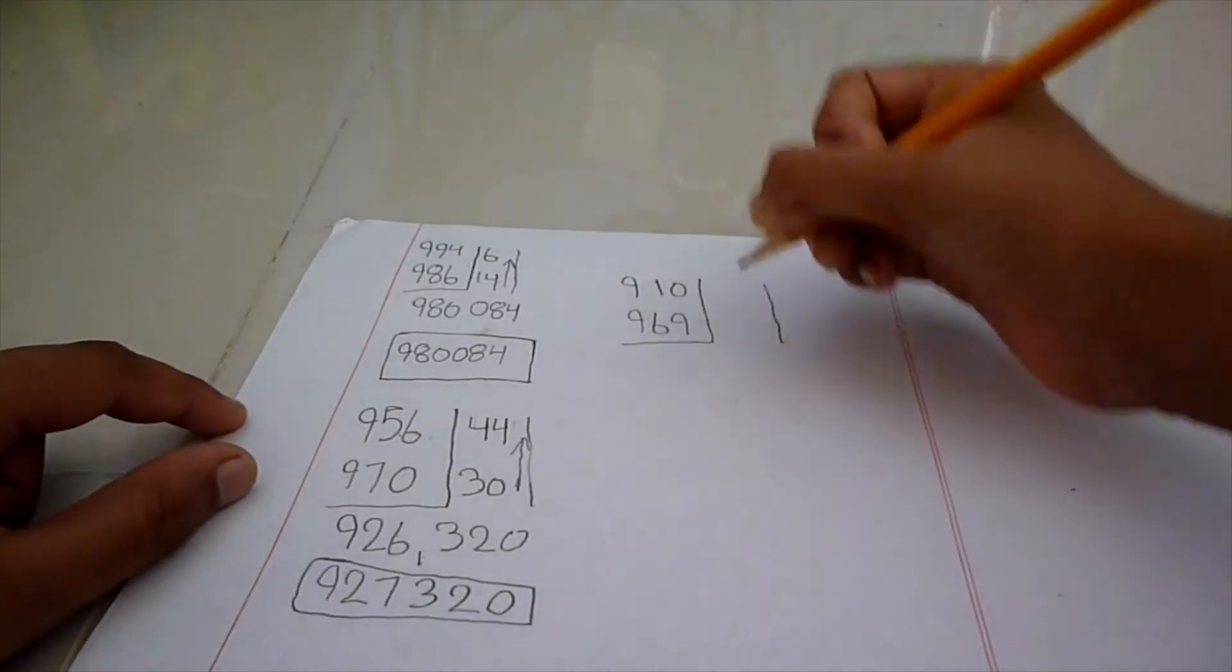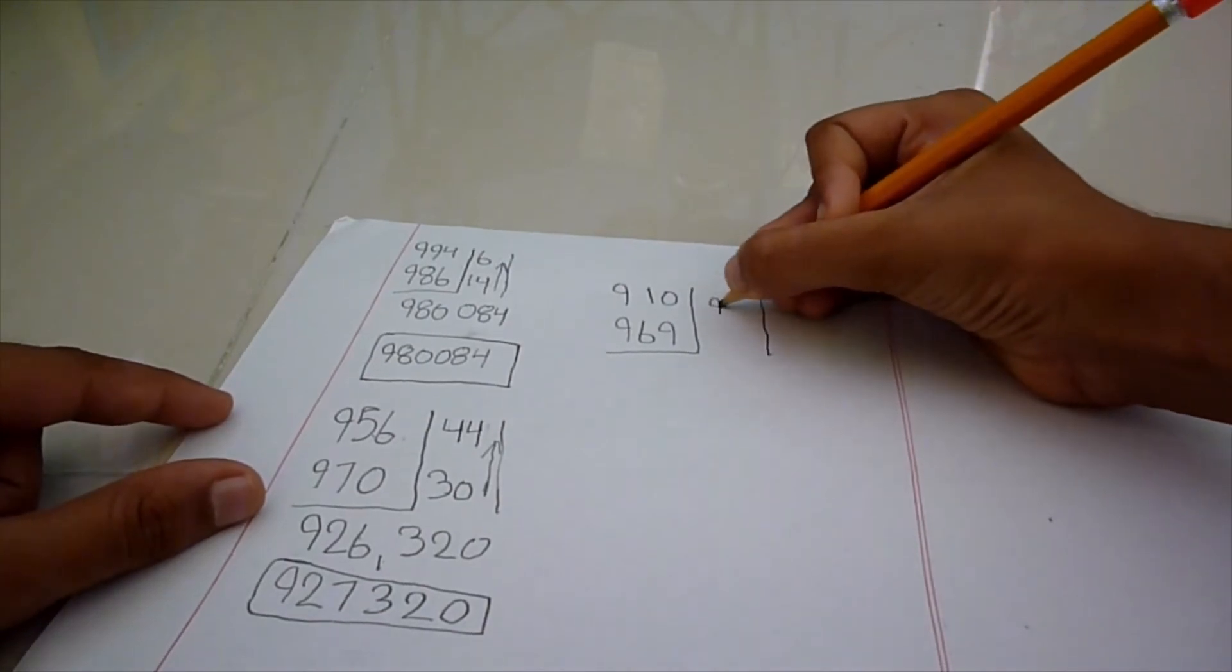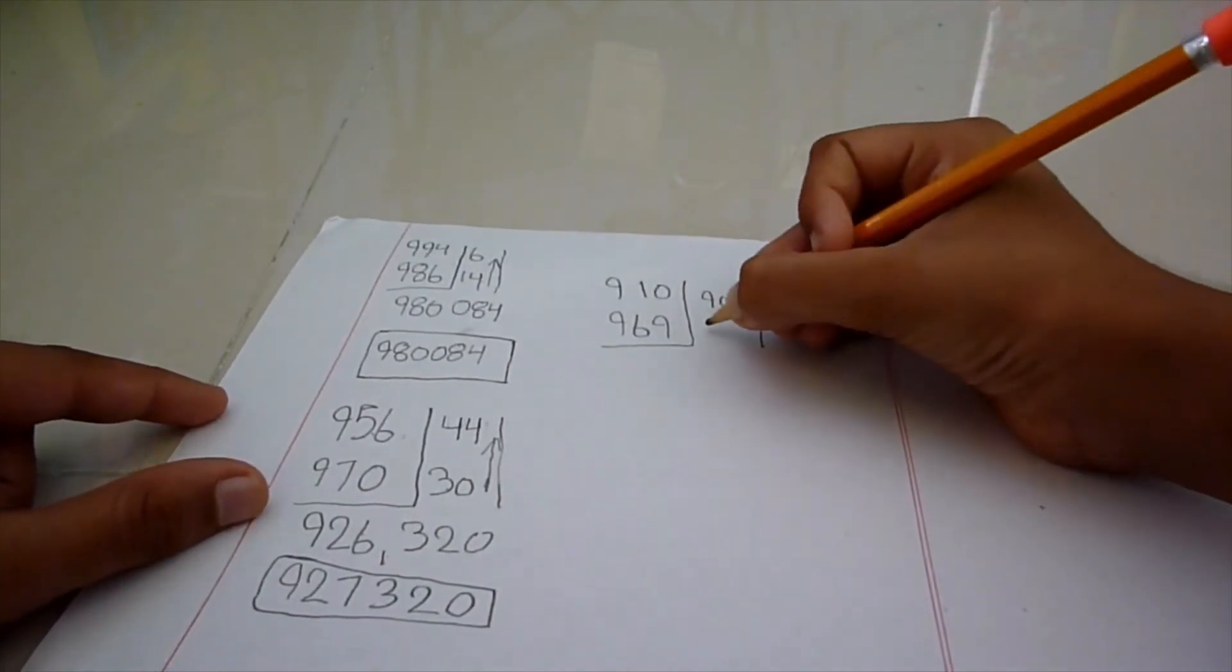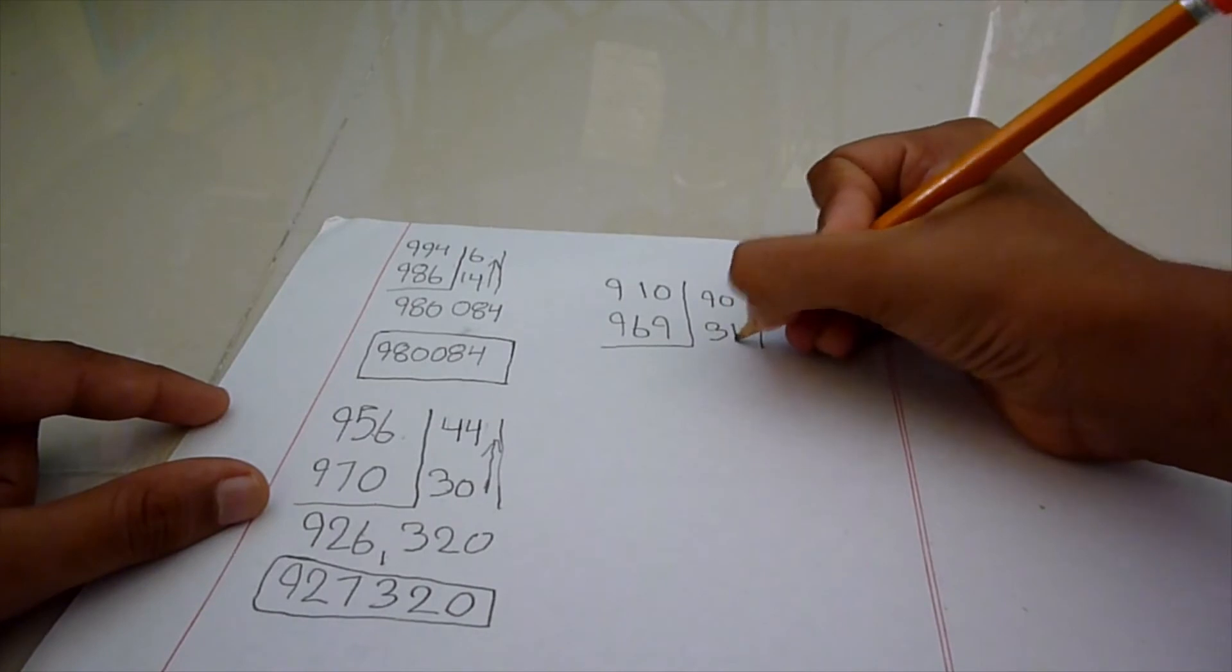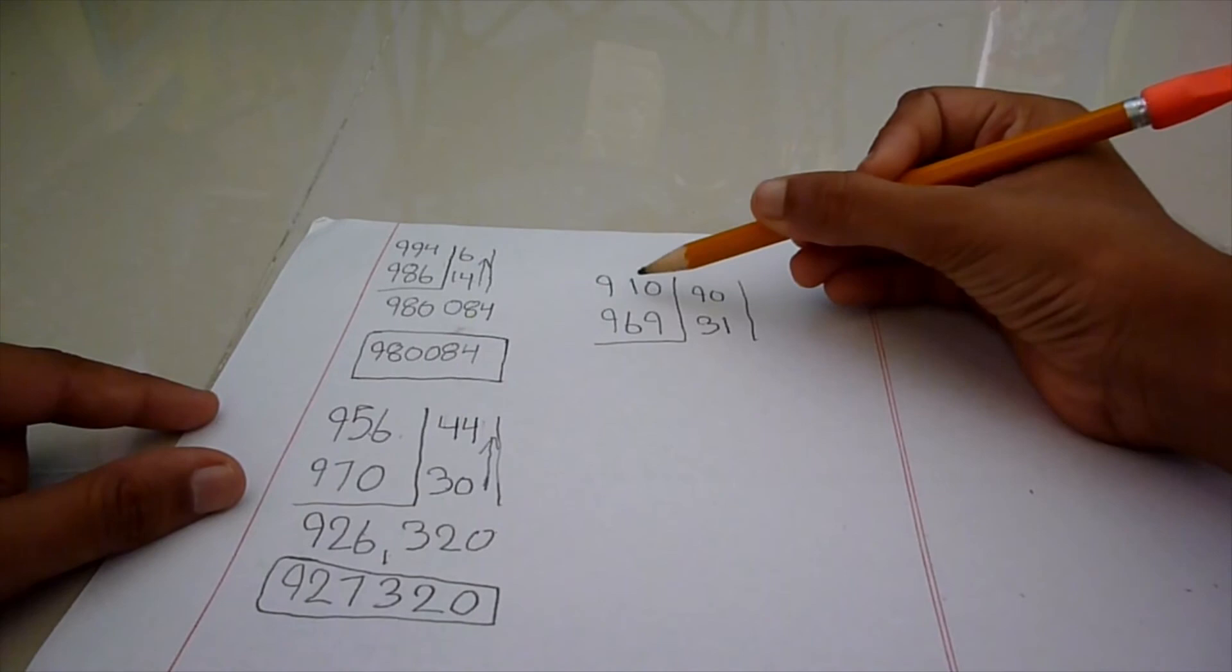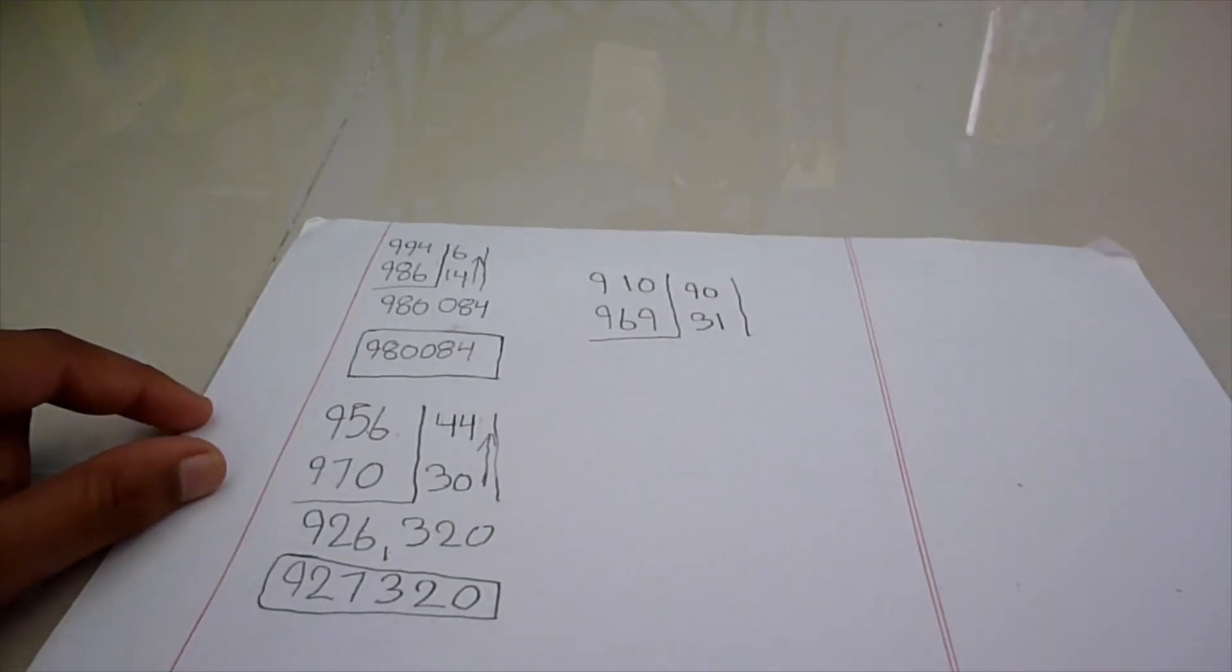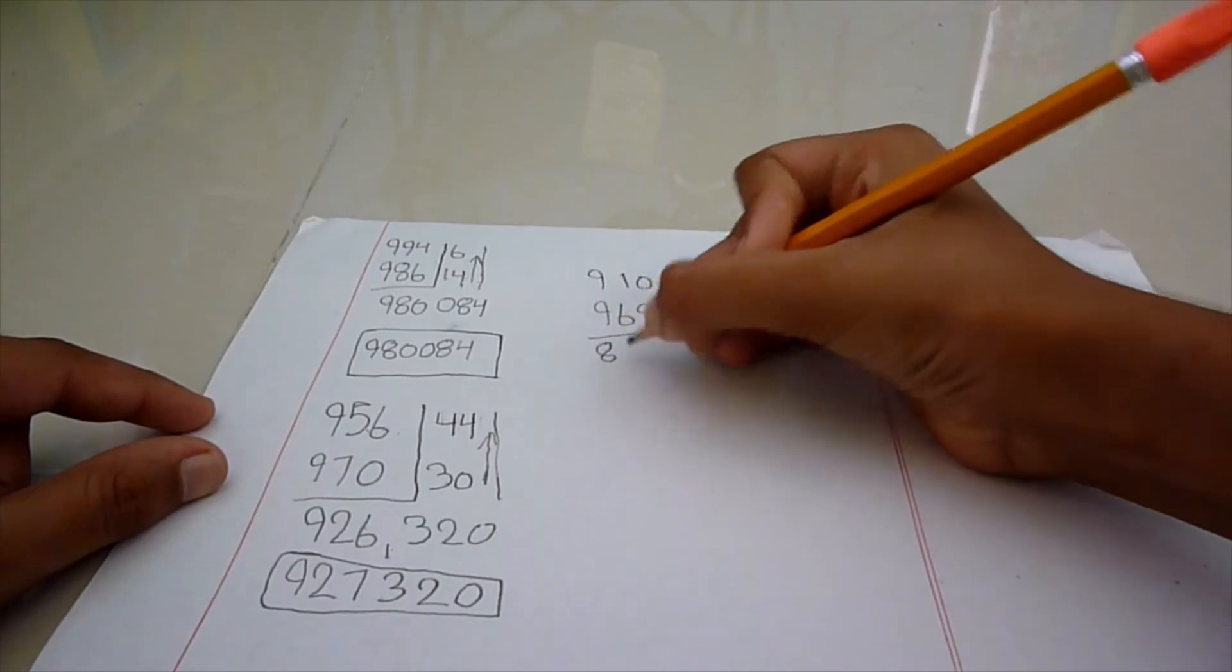So, now we have to subtract these 2 numbers from 1000, which will get 90 and 31. Now, we have to subtract 910 from 31 and you will be getting 879.